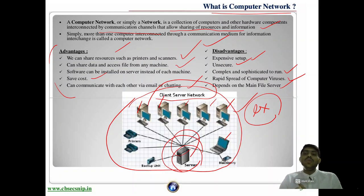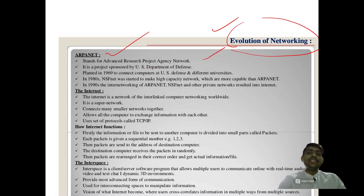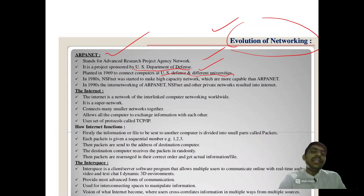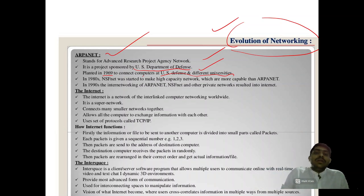There may be some exam questions worth two marks: what is the network, and what are the advantages and disadvantages? Now, the evolution of networking — how the networking concept came about. First is ARPANET: Advanced Research Project Agency Network. It is a project sponsored by the US Department of Defense, planned in 1969 to connect computers at US Defense and different universities.